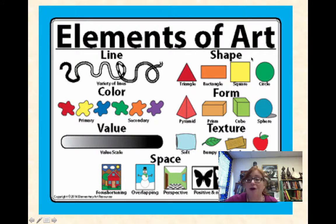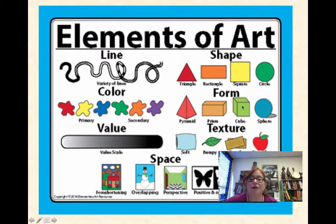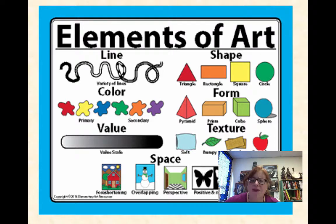Shape — we know our shapes from kindergarten. Shape is usually two-dimensional when we're talking about it, although it could be three-dimensional. When we go into three dimensions, it becomes form. A triangle becomes a pyramid, a rectangle becomes a prism, a square becomes a cube, a circle becomes a sphere. Form can have mass, and mass refers to the weight of the form.